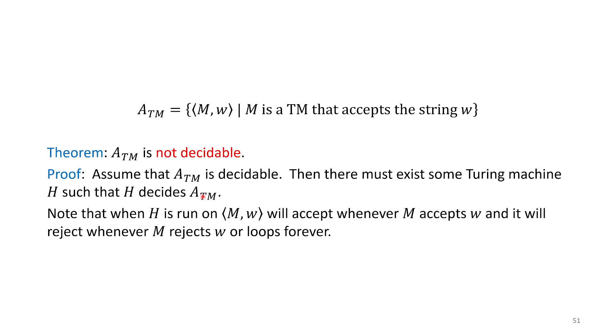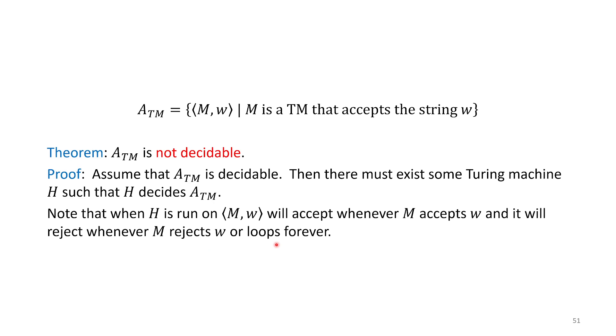Notice I didn't call it UTM because we know UTM does not decide ATM. This is some other special machine, H. By definition, when H is run on M,W, it will accept when M accepts W, and it will reject if M rejects. But also it will reject if it loops forever, and that's important.